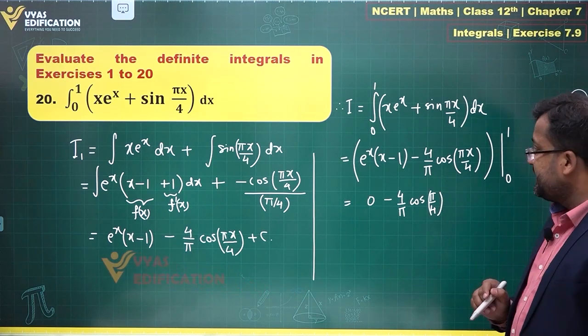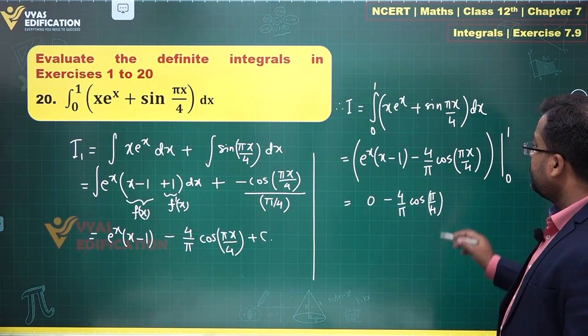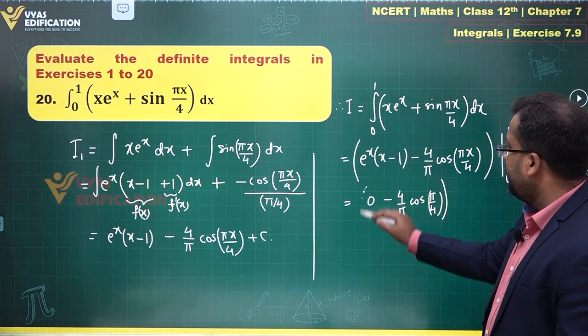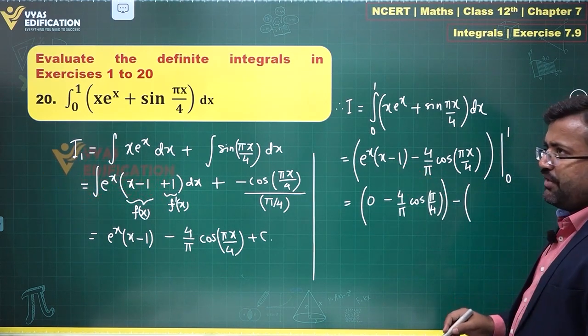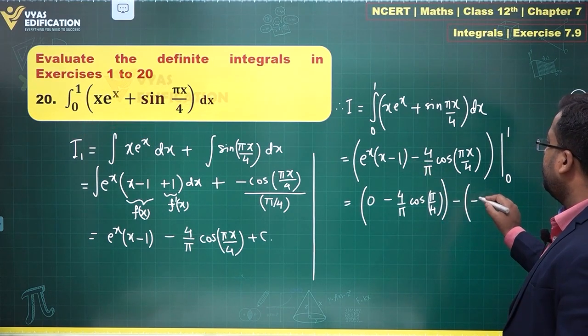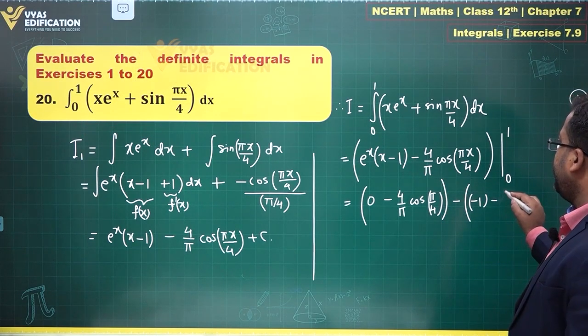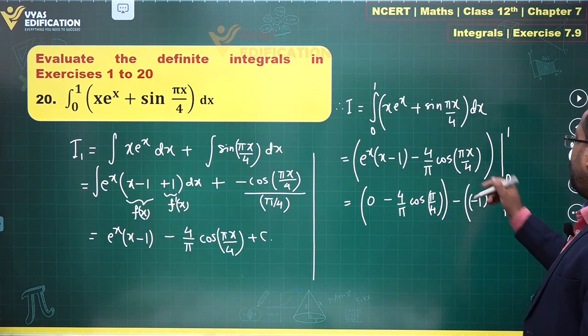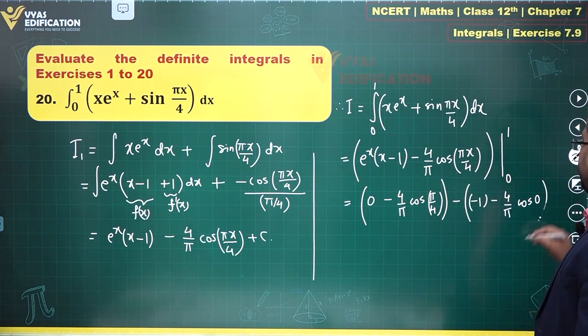That's the first term. Minus - now substitute 0: e^0 is 1, 0 - 1 is -1, this is what you get, minus 4/π·cos(0) is what I'll be getting over here. This is the second term.